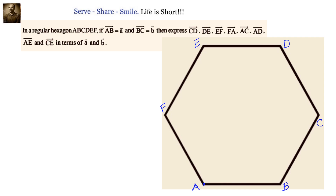In a regular hexagon A, B, C, D, E, F, the AB vector is given by A vector and BC vector is given by B vector. Then express CD vector, DE vector, EF vector, FA vector, AC vector, AD vector, AE vector, and CE vector in terms of A vector and B vector.